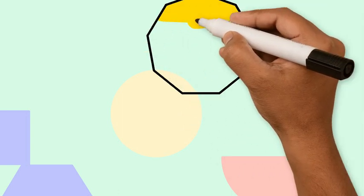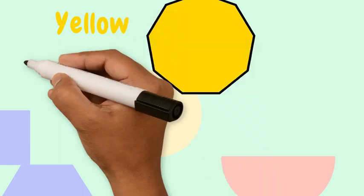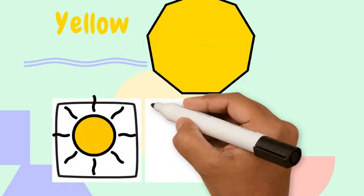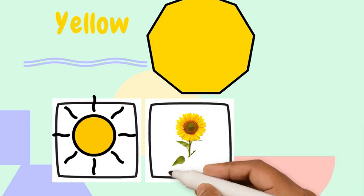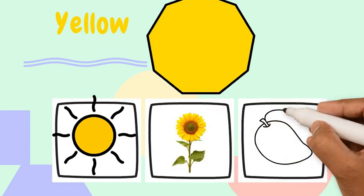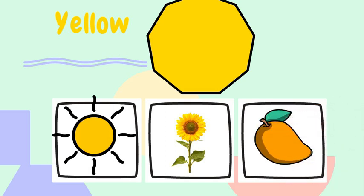Next, let's see yellow color. Let's see some things which are in yellow color. Sun, sunflower, and mango. Yes, this is yellow color.